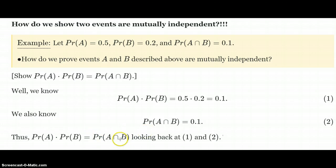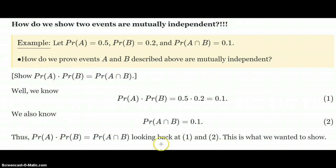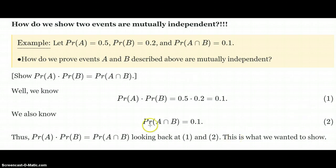We verified that's true. What did we want to show? We wanted to show that equation holds true, and we just showed exactly that. So this satisfies the definition — this means that the events A and B are mutually independent. We are done.